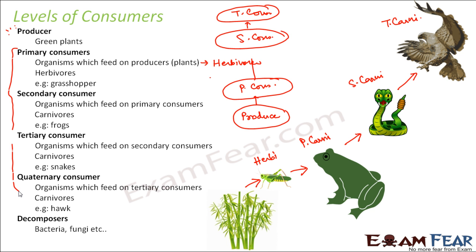One interesting question is: where do omnivores fall? We saw herbivores and carnivores, but what about omnivores? Omnivores are those organisms which feed on both plants and animals. So will they be primary, secondary, or tertiary consumers? It completely depends on what they are eating. If they feed only on plants, they will be primary consumers.